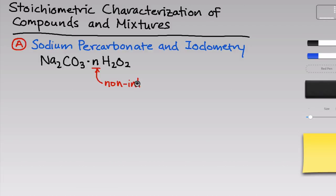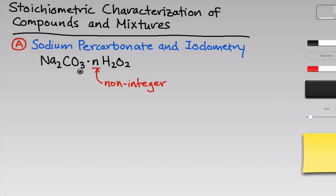The value of n depends on how the sodium percarbonate was prepared, its age, and some other factors. So we're not really going to have a firm known value for the number of H2O2 molecules per sodium carbonate molecule. However, we can say just to ballpark it that this should be somewhere in the range of one to two H2O2 molecules per sodium carbonate molecule, with a little bit of wiggle room above and below.